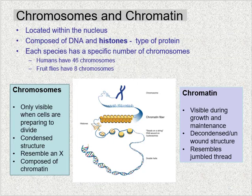Chromosomes and chromatin are both forms of DNA found within your cells. Both are located within the nucleus and both are composed of DNA and histones — the type of protein that DNA winds itself around. All species have a specific number of chromosomes: humans have 46, and fruit flies have 8. Typically, the more complex the species, the more chromosomes they have.